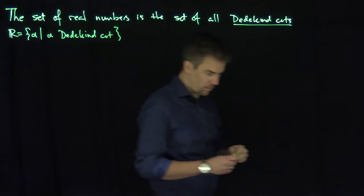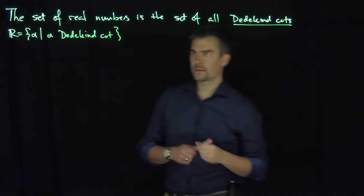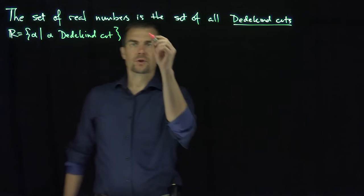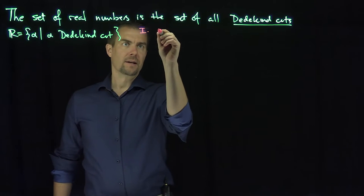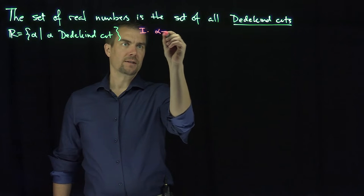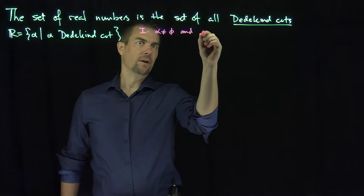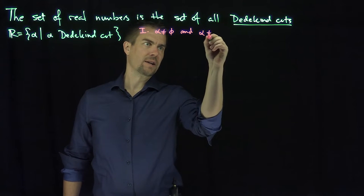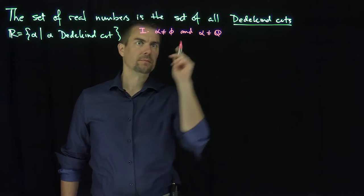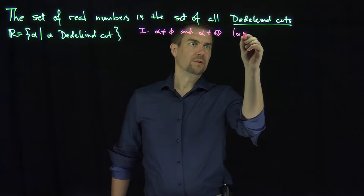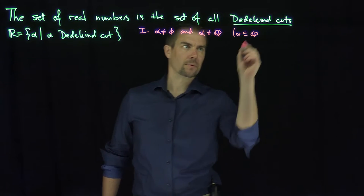We know that Dedekind cuts have three properties. The first property is that the cut is not the empty set — it's not empty — and the cut is not the entire set of rational numbers. Alpha is a subset of Q.